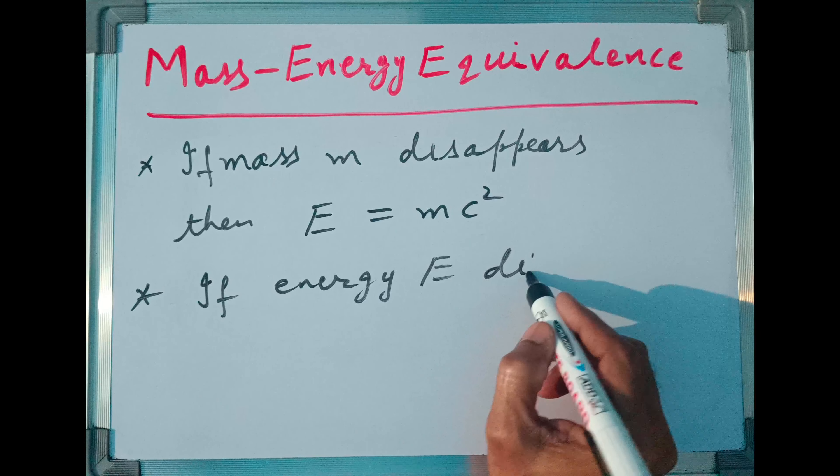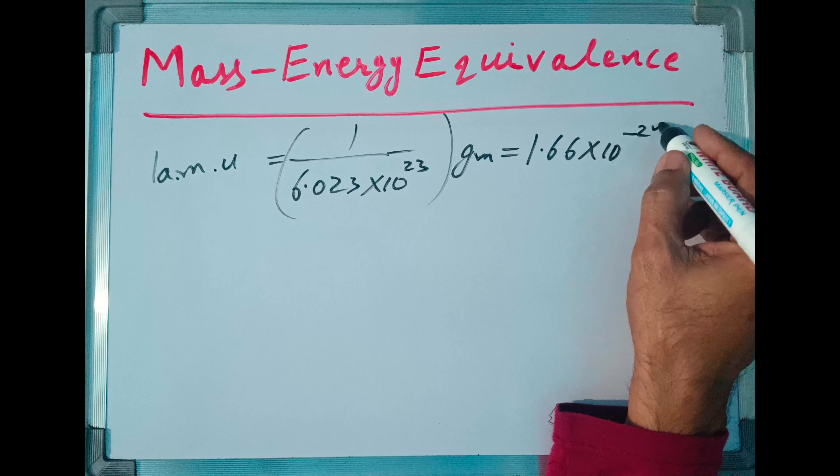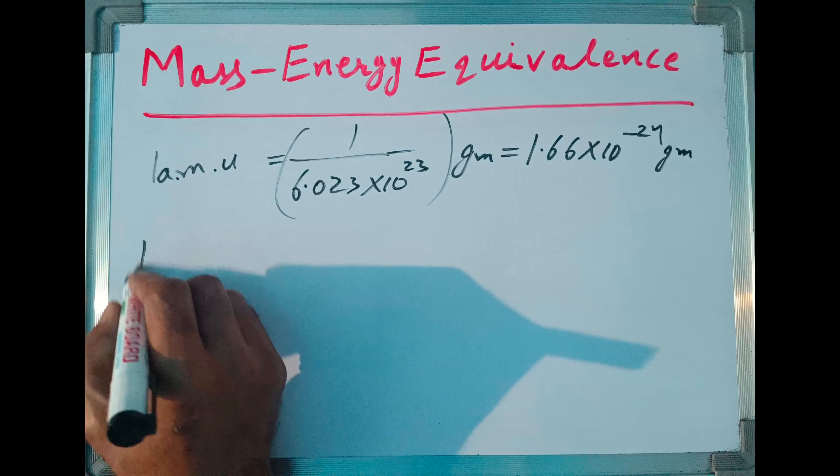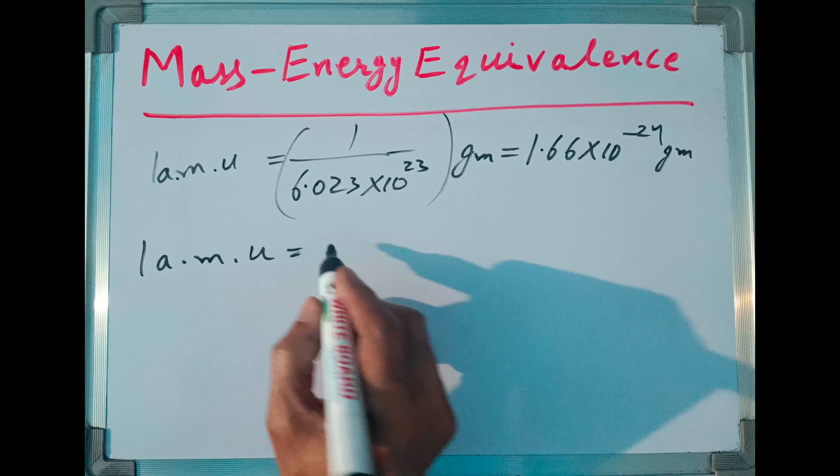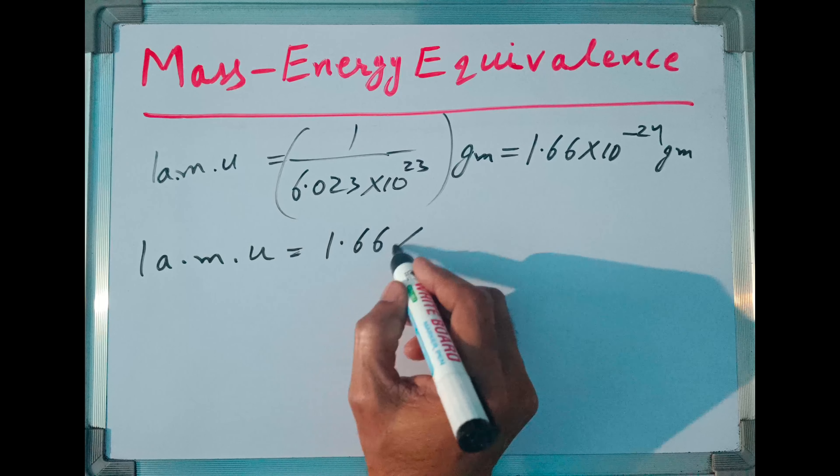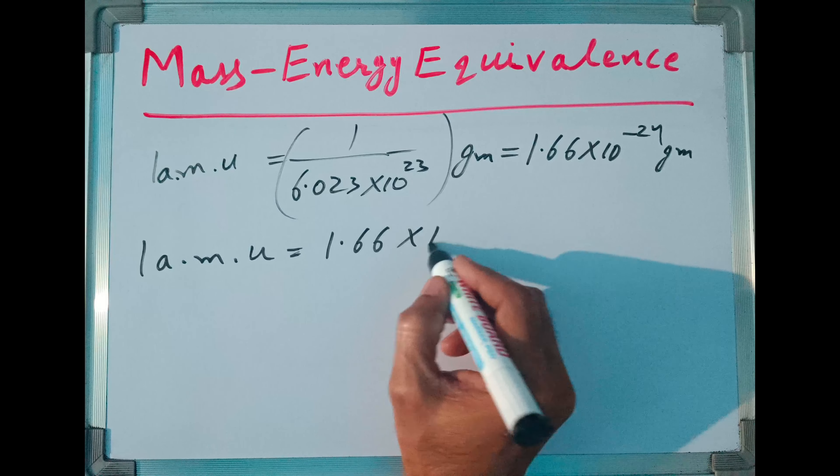After simplifying, we get 1.66 × 10⁻²⁴ grams. Converting to kilograms, this equals 1.66 × 10⁻²⁷ kilograms. So we are given m = 1.66 × 10⁻²⁷ kg.